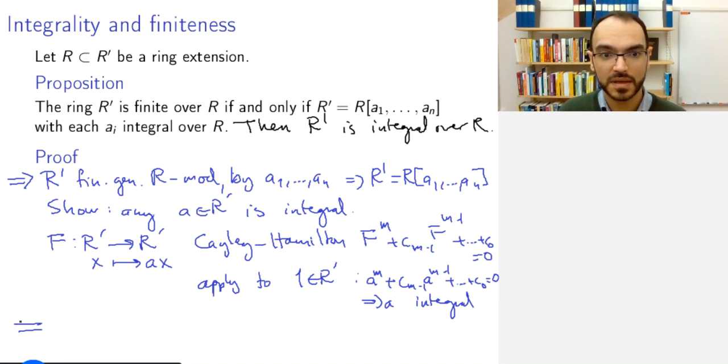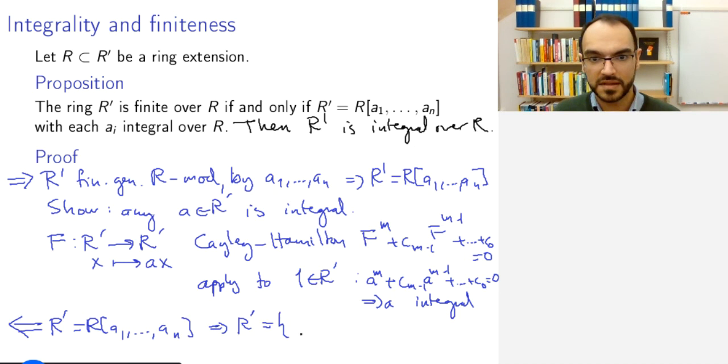In the other direction, the proof is simpler. Because assume that R' is generated in such form, R', meaning that assume that R' is R[a_1, ..., a_n], then R' is the set of R-linear combinations of products of the form a_i^{m_i}. So R' is generated as an R-module by these monomials.